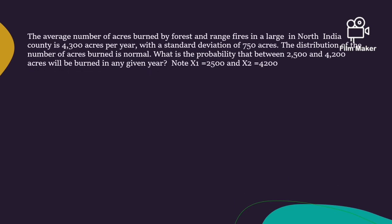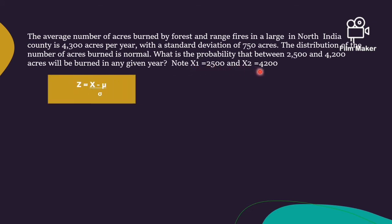Problem number one: The average number of acres burned by forest and range fires in a large North India country is 4,300 acres per year, with a standard deviation of 730 acres. The distribution of the number of acres burned is normal. What is the probability that between 2,500 and 4,300 acres will be burned in any given year? Note: X₁ = 2,500 and X₂ = 4,200.